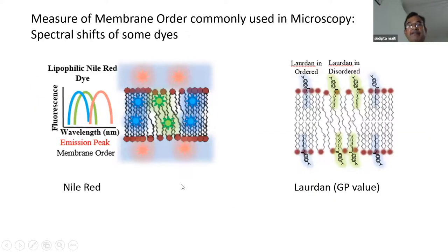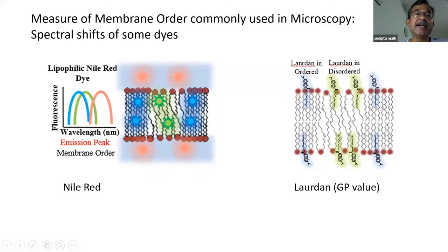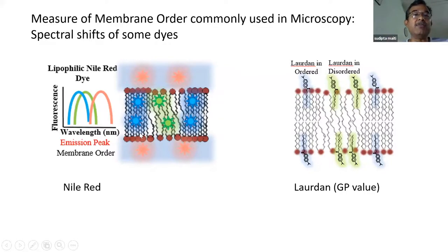People actually measure membrane order, and a lot of confocal microscopy is done on dyes that go into the membrane and give you the local order of the membrane. You can see a lipid bilayer local part — these are the tails, these are the head groups — and you can see a disordered region where the tails are flopping about, and a more ordered region.